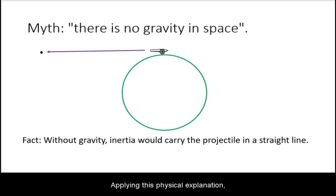Applying this physical explanation, now we see why it is a myth that there is no gravity in space. If there was no gravity, then a projectile shot parallel to the ground would just continue in a straight line and escape to infinity.